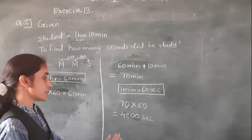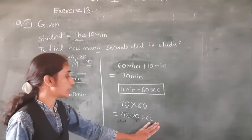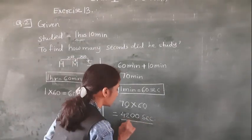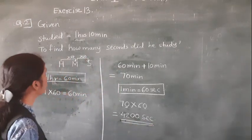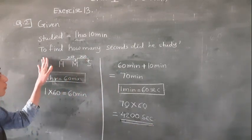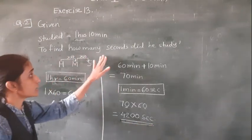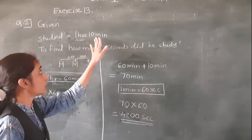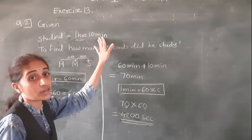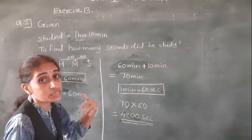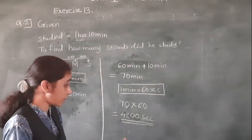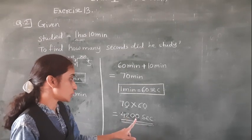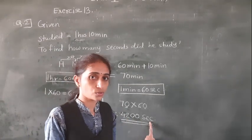What is the answer? 4,200 seconds. The question asks how many seconds did Rohan study — he studied for 1 hour 10 minutes, which means 4,200 seconds.